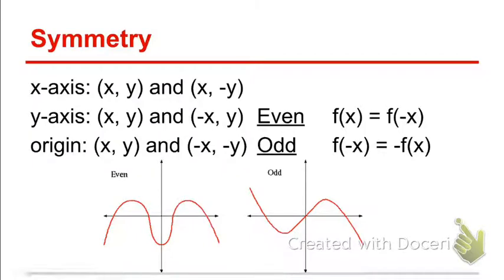Here's part two of graphs of equations. In the first video, we went over how to graph by making table values and also how to find x and y intercepts. The third key component to understanding what a graph looks like is symmetry. There are three types, and we're mainly going to focus on the second two, but in this video I'll go over all three.